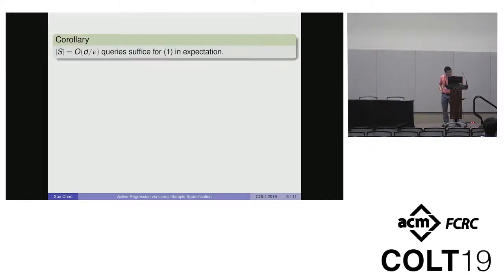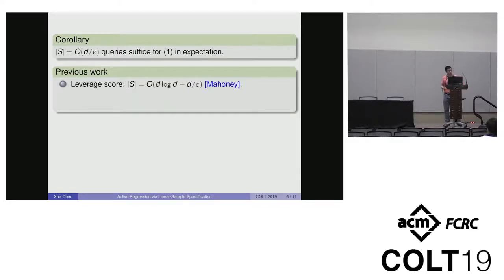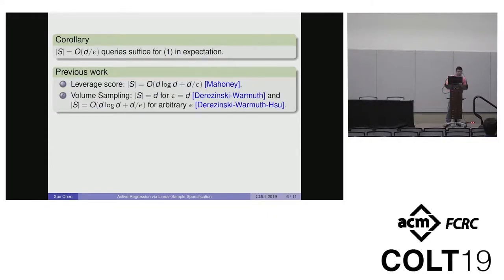Let me review some previous work. It is well known that leverage score achieves this with size in the order of D log D plus D over epsilon. Another line is volume sampling. In a beautiful work, Dereziński-Warmuth gave an algorithm with exactly D queries for fixed epsilon, later strengthened to arbitrary epsilon by Dereziński-Warmuth-Hsu with S of size D log D plus D over epsilon.